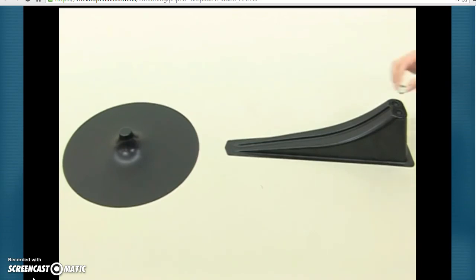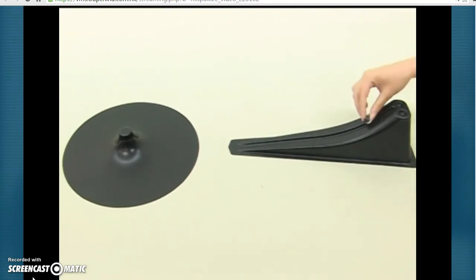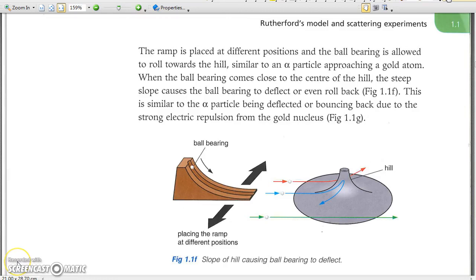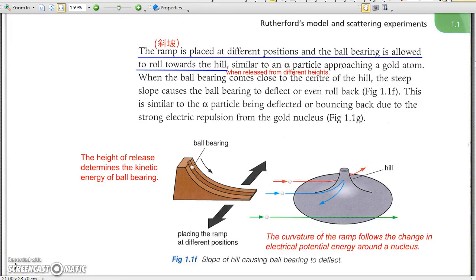This model can be used to simulate how alpha particle is deflected in the scattering experiment. When released at different heights, the ball bearing approaches the hill at different speeds. Notice how the ball bearing is deflected. How is the angle of deflection affected by the speed of the ball bearing? The ramp is placed at different distances from the center of the hill. The energy of the scattering alpha particle can be adjusted by releasing it at different heights. Don't forget to try the apparatus in class. You will see how the particle is scattered differently under different conditions.